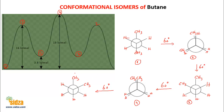For example: starting from a partial eclipsion and doing a 120-degree rotation — that is 60 plus 60 degrees — gives a fully eclipsed conformation. And if you have a gauche conformation and do a 120-degree rotation, you again get the gauche conformation.